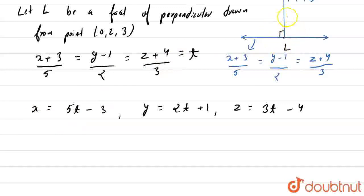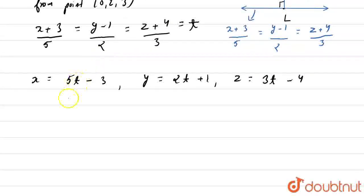We know that for the foot of perpendicular of two lines there is a condition that a1·a2 + b1·b2 + c1·c2 = 0.